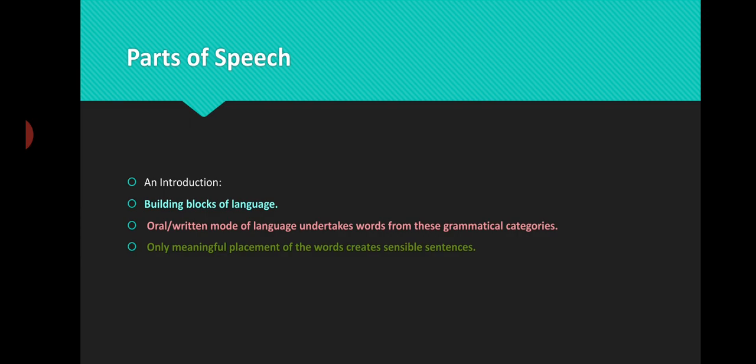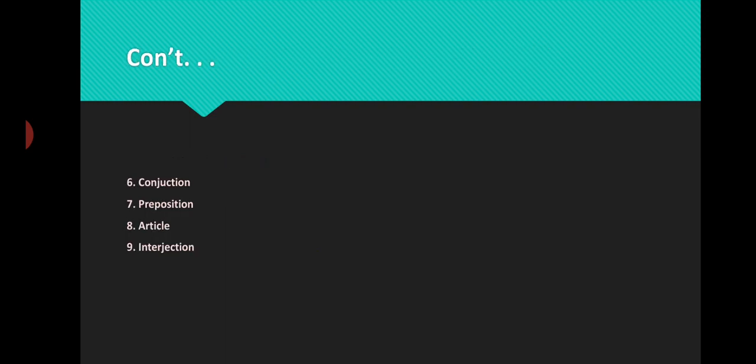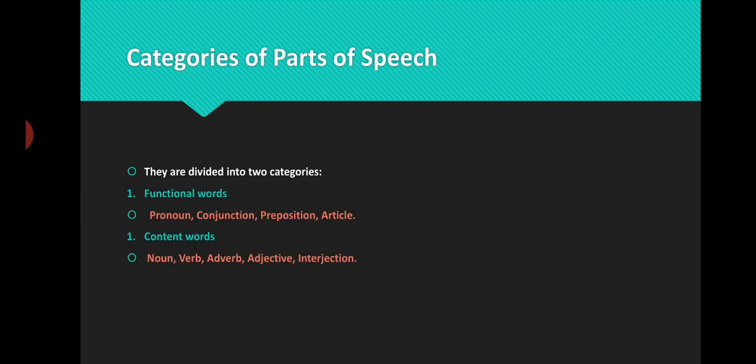The words we borrow from these parts of speech must be put in a proper order to make meaningful sentences. How many parts of speech are there? They are nine in number: noun, pronoun, verb, adverb, adjective, conjunction, preposition, article, and interjection.